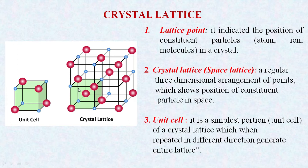When we observe this crystal lattice, we can clearly observe that this particular crystal lattice is formed by repeating one small unit. So if you repeat this small unit along all three directions — say the x-axis, y-axis, and z-axis — you will get this crystal lattice.